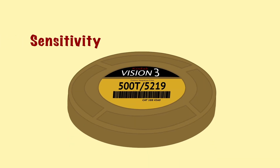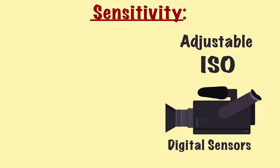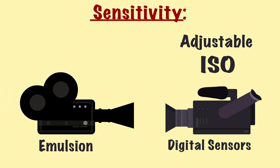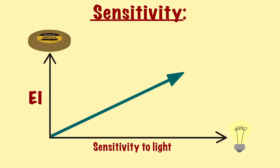When deciding the sensitivity for your film stock, the procedure is slightly different from dealing with digital cameras. With digital sensors, you can change the sensitivity by adjusting the ISO. But for emulsion, the sensitivity is predetermined by the stock you choose — this is referred to as the exposure index. Similarly to ISO, the higher the exposure index, the more sensitive to light it is. It's also worth noting that the higher the sensitivity, the more likely you are to accumulate grain, but the lower the exposure index, the finer the grain will be.